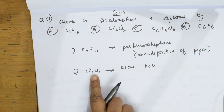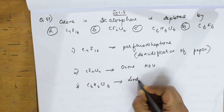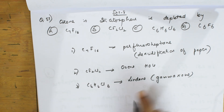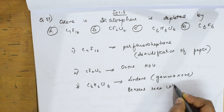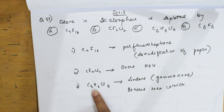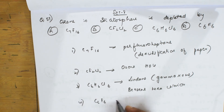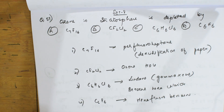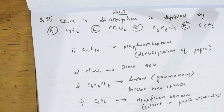Next is C6H6Cl6, called lindane, also called gamaxin or benzene hexachloride — C6H6 (benzene), hexa (6 chlorines). The fourth compound is C6F6, called hexafluorobenzene, and it is used as a solvent in photochemical reactions.